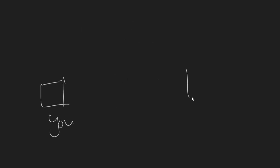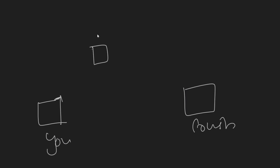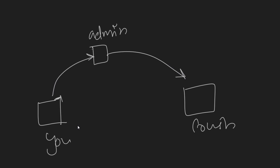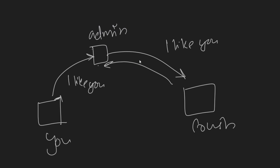The third feature is integrity. Consider this scenario: you're talking to your crush over Facebook from your college network. The network administrator can see the packets going through it, but since they're encrypted they can't see the contents. However, they can still modify the packets. If you send the message 'I like you,' TLS needs to make sure that's the same message received at the other end. TLS must ensure that data is not tampered with in transit in both directions — that's what integrity means.